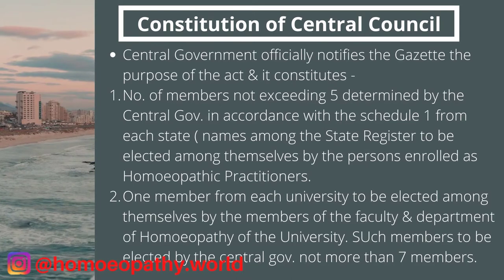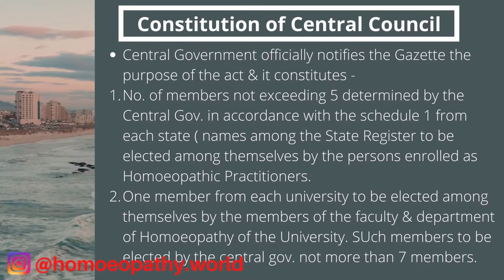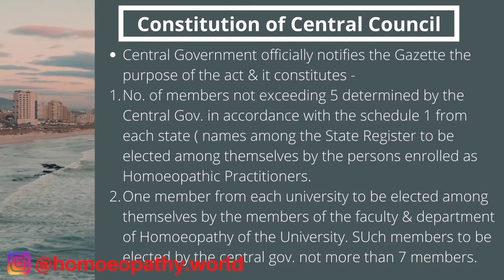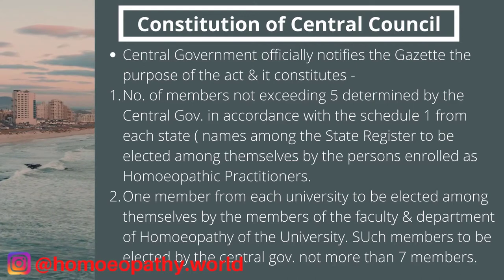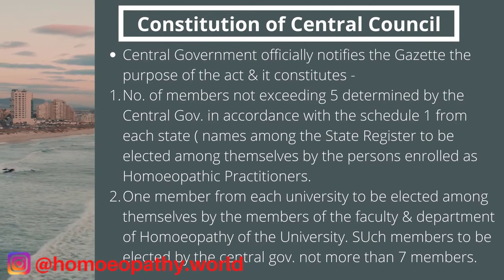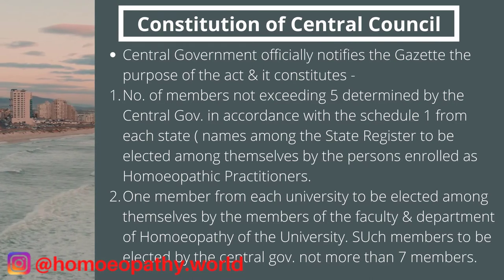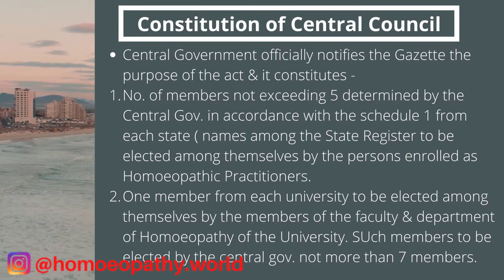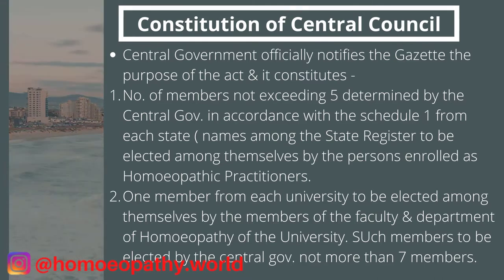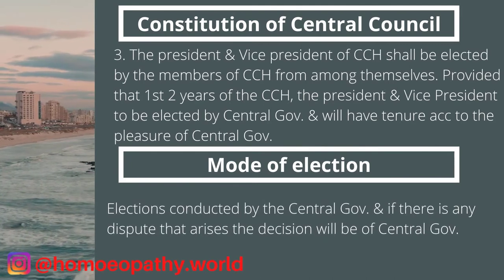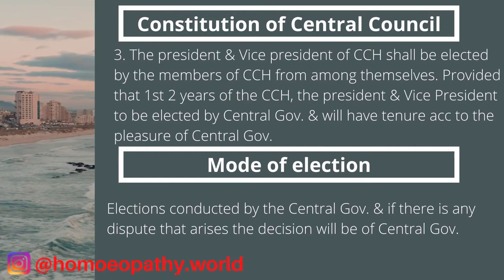Regarding the constitution of the Central Council: the central government officially notifies the Gazette for the purpose of the act. The number of members should not exceed 5, as determined by the central government in accordance with Schedule 1, from each state, elected from among persons enrolled as homeopathic practitioners in the state register. One member will be elected from each university from amongst the members of the faculty or department of homeopathy. Such members to be elected by the central government should not be more than 7. The president and vice president of the CCH shall be elected by the members of the CCH from among themselves.